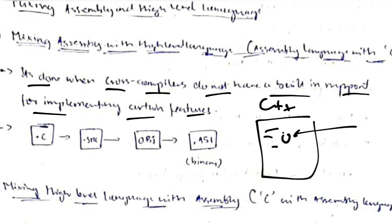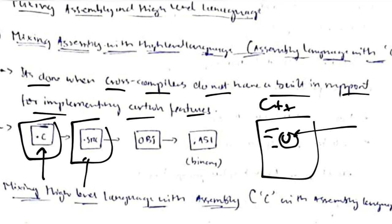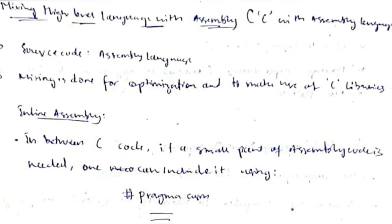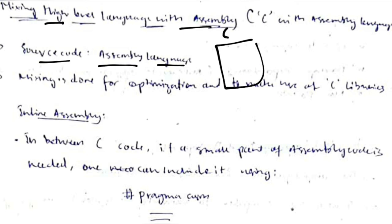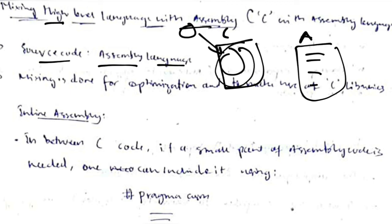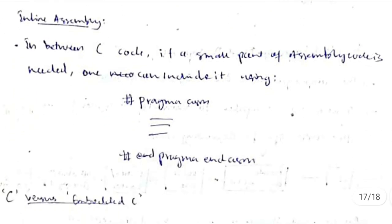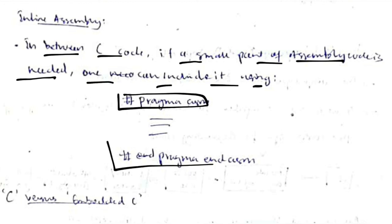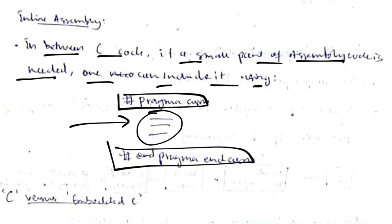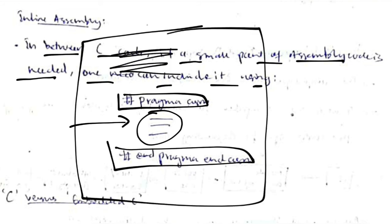The second sub-category is mixing high-level language into assembly code — where the source is written in assembly but C library functions are needed. This is achieved using inline assembly: within the C/C++ code, a small piece of assembly code can be included using specific hash tags. The whole code is C or C++, with assembly sections inserted inline wherever needed.